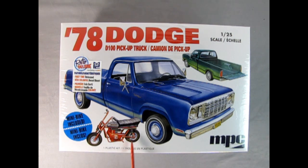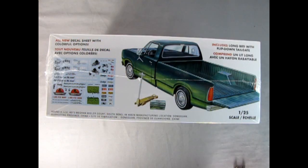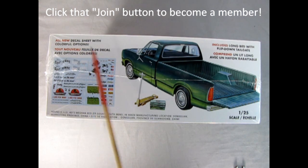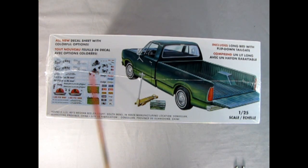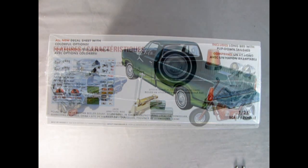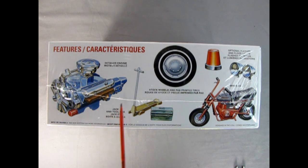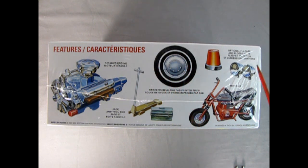This model kit includes this cool little mini bike as well and it's one plastic model kit in 1/25th scale. This is a Retro Deluxe edition. It features the first time this has been released in a long time, new colorful decal sheet. The box shows an all-new decal sheet with colorful options. Some really cool motorbike decals, a gardener one, and it also includes a long bed with a flip down tailgate. You get a floor jack and a toolbox, wonderfully detailed engine, stock wheels and pad printed tires, optional flasher and flood lights and this really cool mini bike.